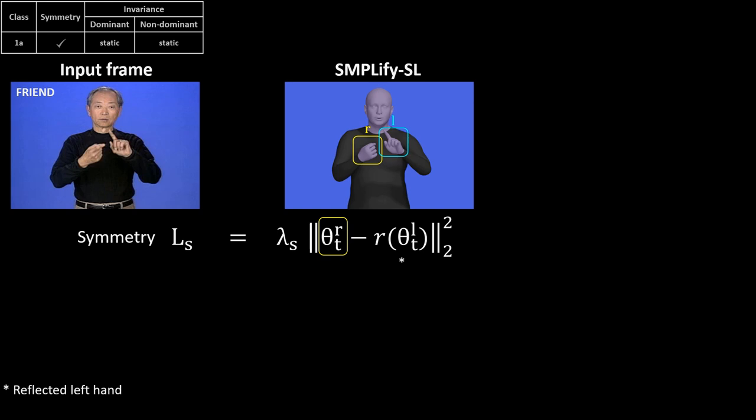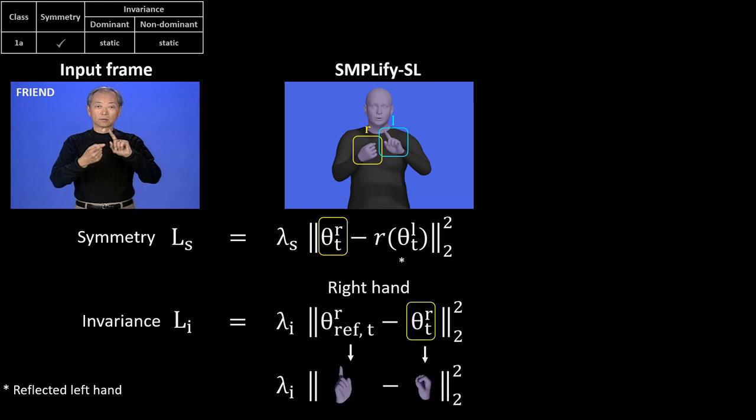However, when the two poses are reconstructed very differently, symmetry alone can't solve the reconstruction problem. We address these issues with our second constraint, hand pose invariance.